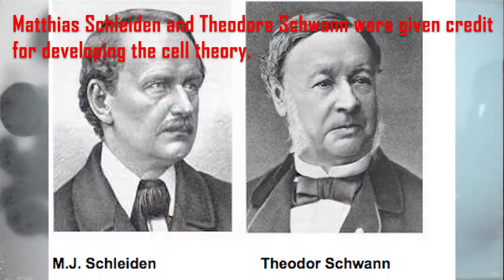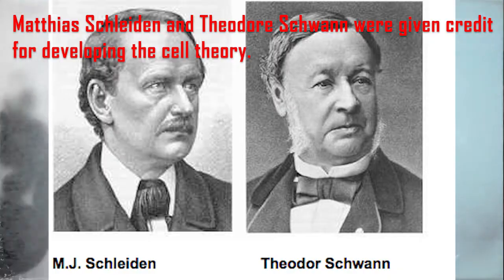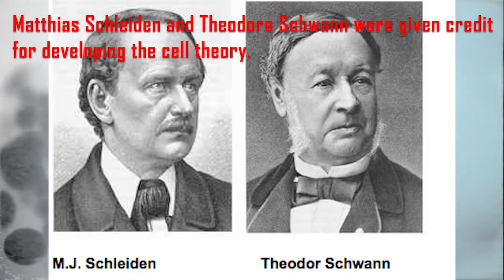Credit for developing the cell theory is largely given to two scientists, Matthias Schleiden and Theodor Schwann. Rudolf Virchow contributed to the cell theory as well, but is often not credited for his work — we'll come back to him a little later in the video. As Schleiden and Schwann shared information on plant and animal cells they gathered throughout the years, this finally led up to the cell theory that we know of today, which is composed of three parts.